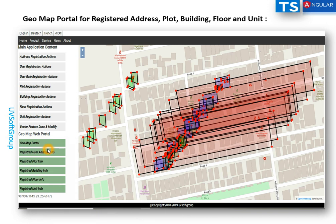In the default application when it starts, you see all components because I'm logged in as the admin or global user. You see the geo map portal — all information is visible and you can click to see detailed information for each geometry: detailed plot information, building information, floor information, and unit information. This is the most important part of the application — you can even use it for security systems like police or fire services, hospitals, or clinics.